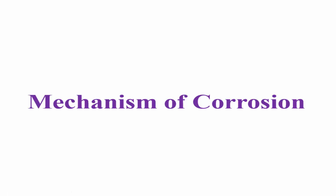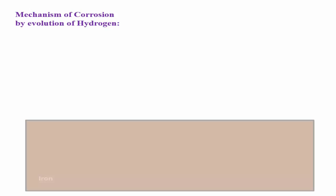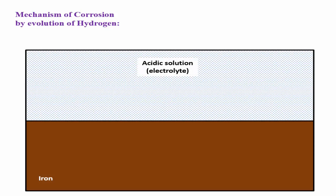Today we will learn the mechanism of corrosion. First, we will see the mechanism of corrosion by evolution of hydrogen. Consider an iron tank covered with acidic solution or acidic electrolyte.